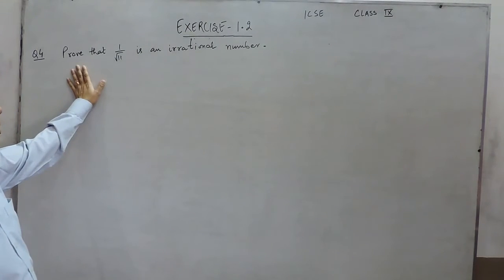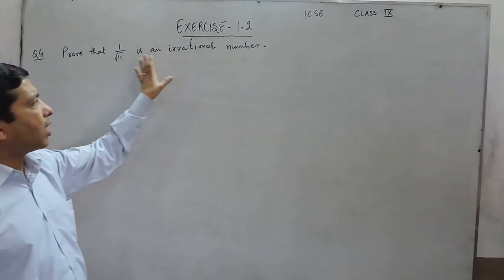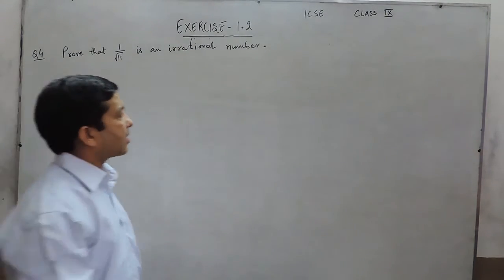Hello everyone, the question number 4 is: prove that 1 upon under root 11 is an irrational number.